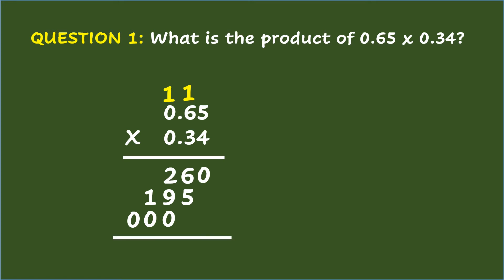After this, add the decimals from right to left. Starting with the right-most column, bring down the 0. Next, 6 plus 5 equals 11. Since the answer is more than 10, regroup 1 to the next higher place and retain the other 1. Next, 1 plus 2 plus 9 plus 0 equals 12. Since the answer is more than 10, regroup 1 to the next place and retain 2 below. Then, 1 plus 1 plus 1 plus 0 equals 2. And bring down the 0.